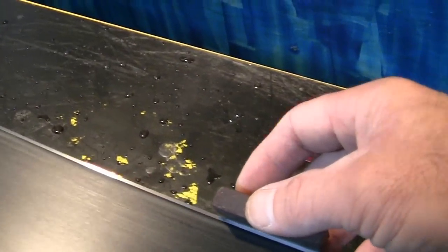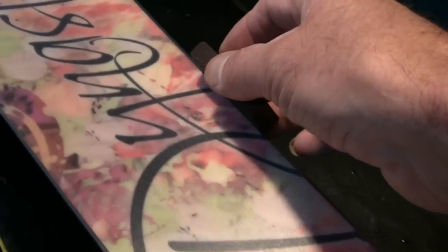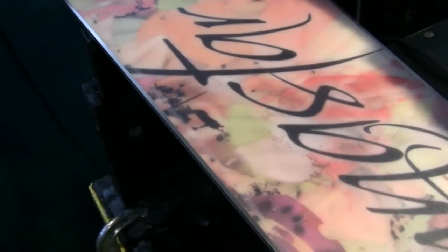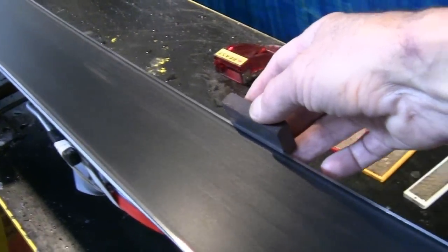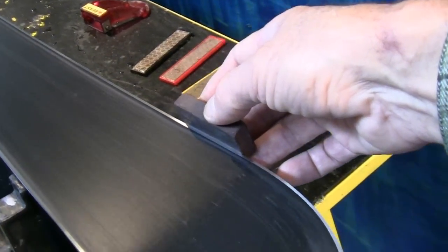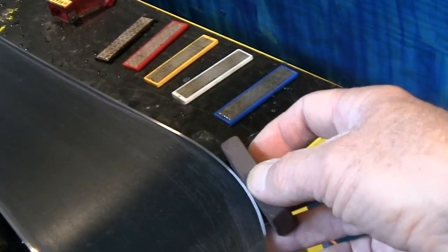You just take it on the edge and you just barely touch it. You run it down the edge just on a slight angle on the side edge once. You're barely pressing, almost not pressing at all. All you're doing is taking off little microscopic hairs.